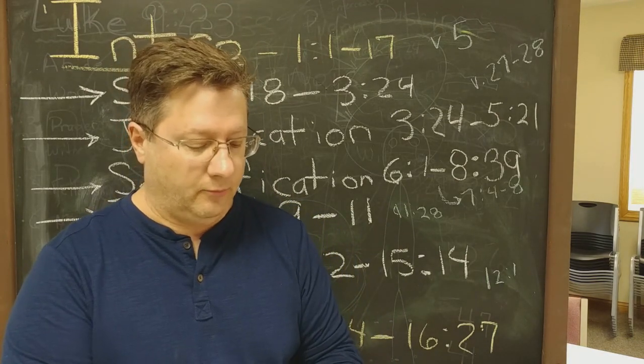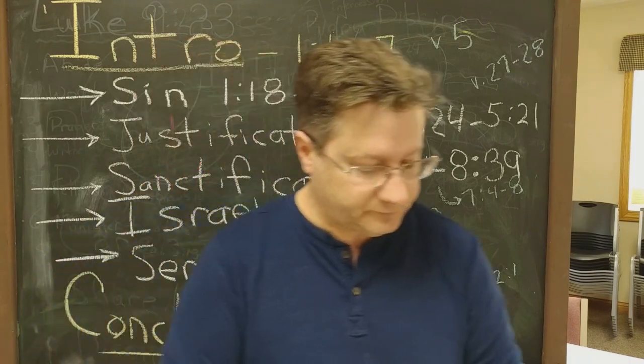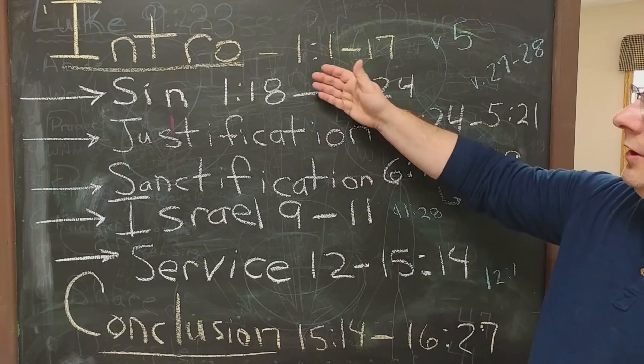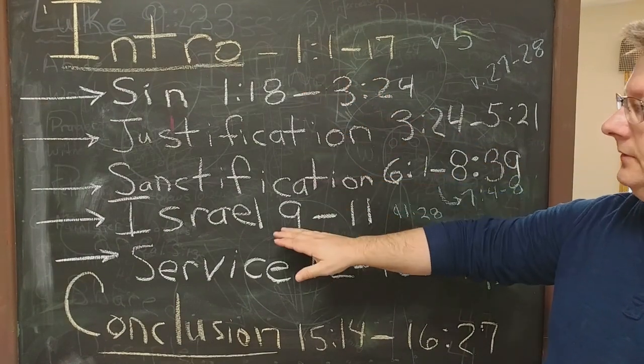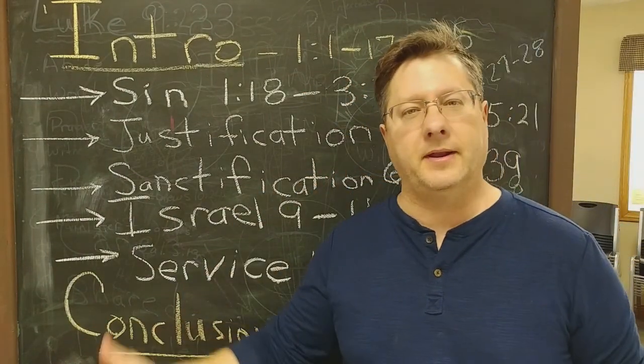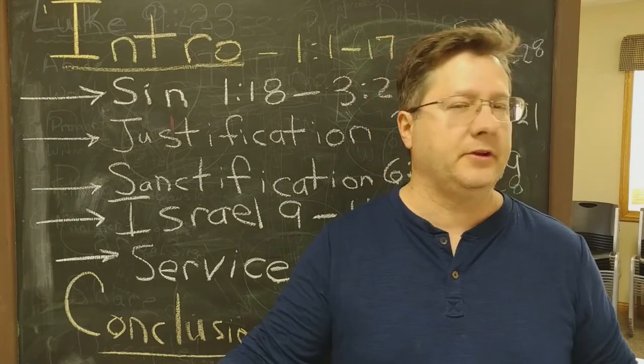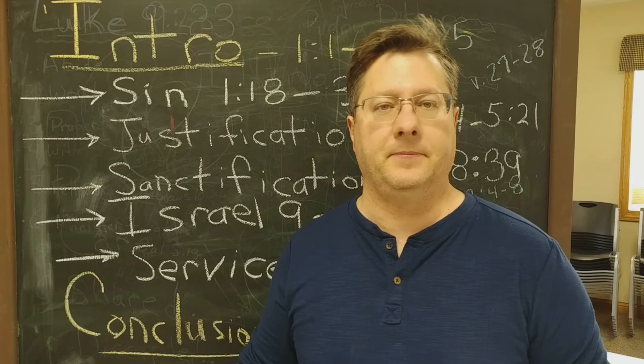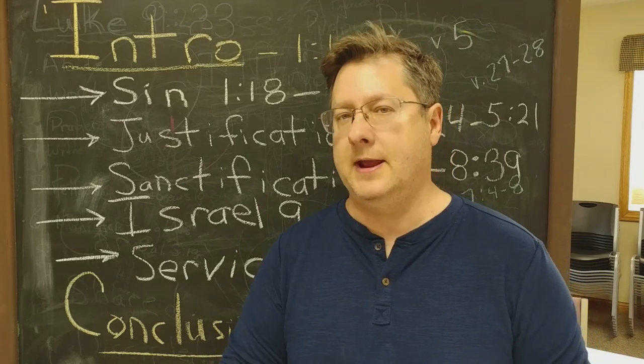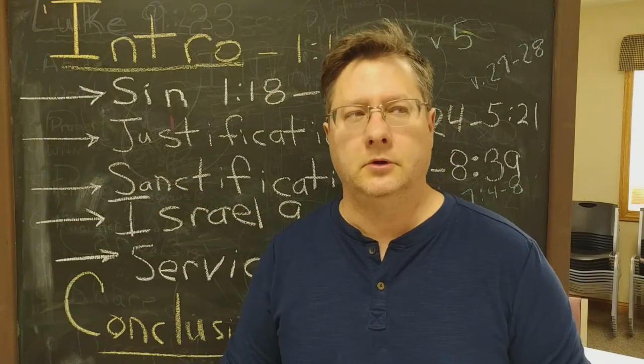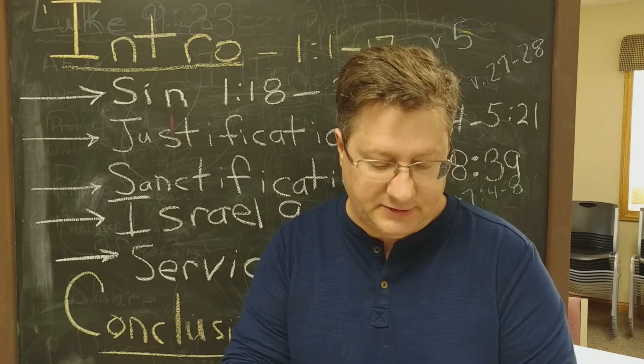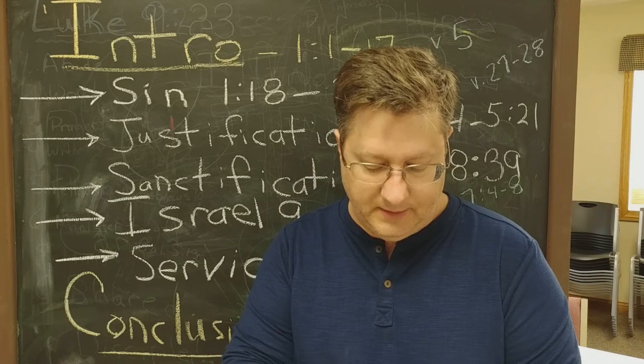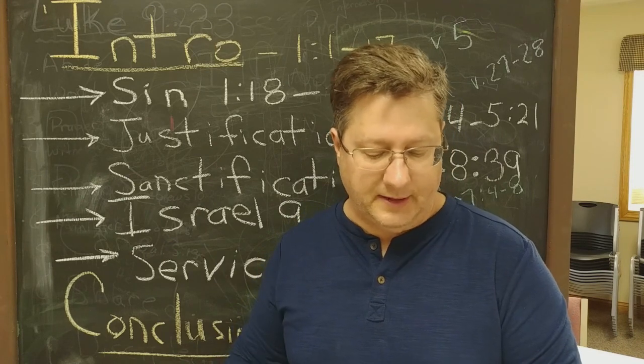We go on to the next portion and actually he starts talking about Israel. It's interesting we go through sin, justification, sanctification. Why in the world does he start talking about Israel? What does Israel have to do with this? It was because there's a verse in chapter 8, in the last part of chapter 8, that causes him to think about but what about Israel?